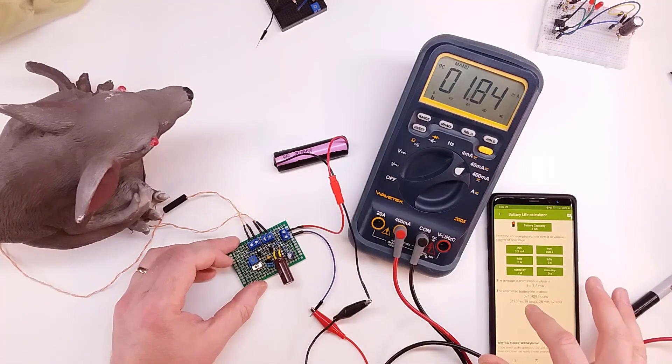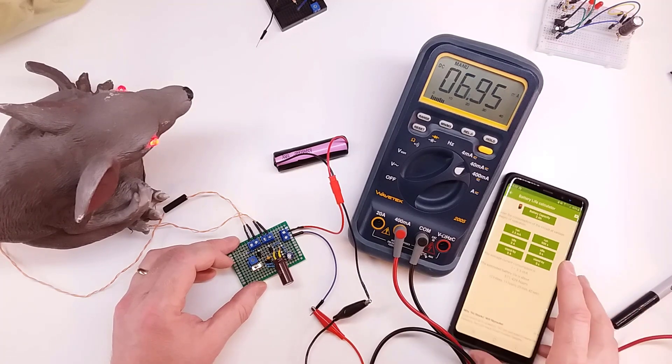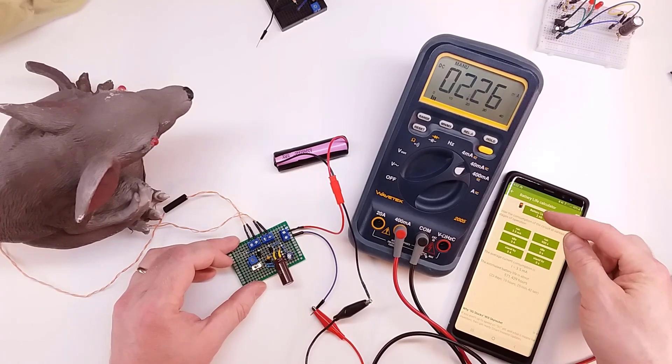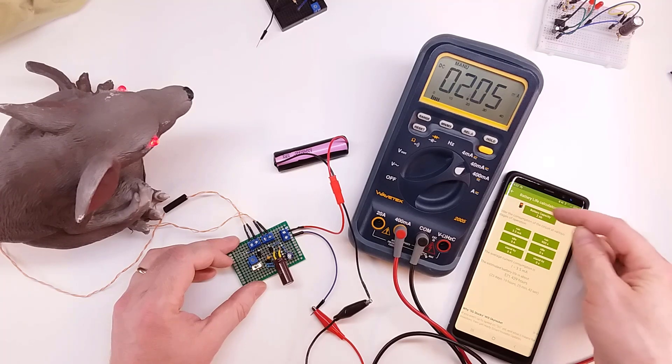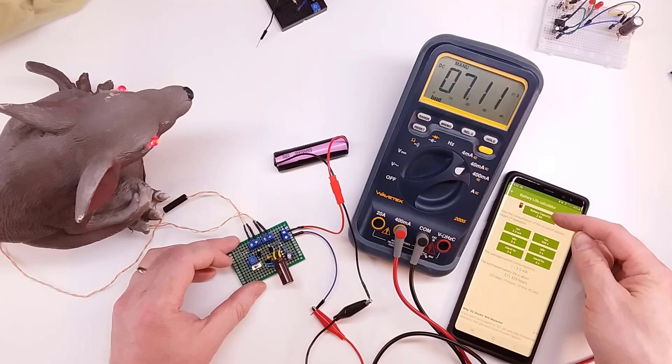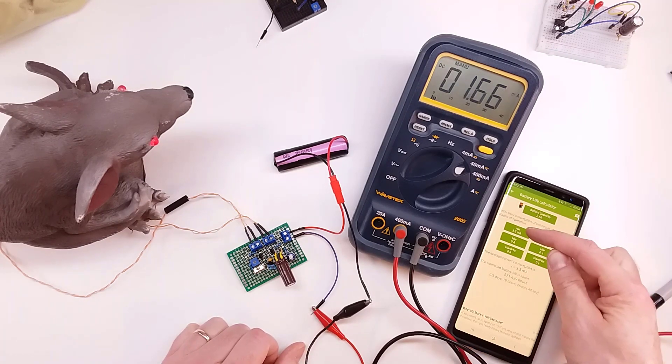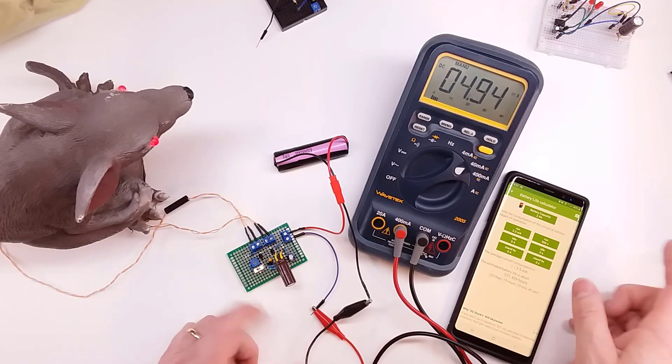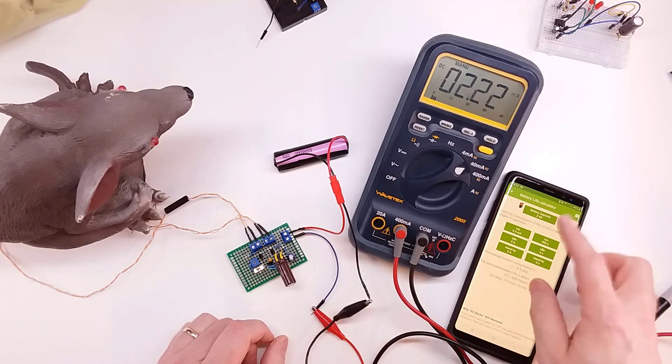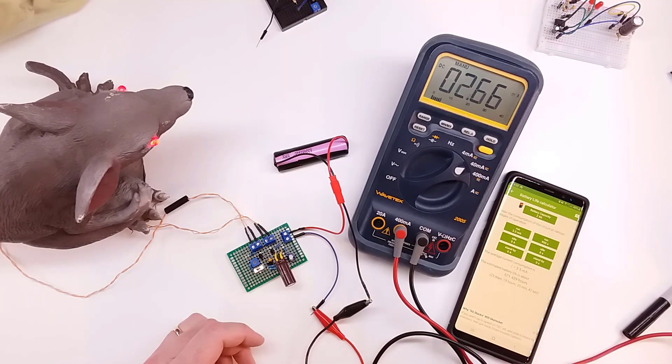So if we go ahead and pull up our battery calculator, which I've already done the check on here. If we say this is a 2,000 amp hour, or let me see, a 2 amp hour, 2,000 milliamp hour battery, which is pretty close to what this 18650 is. If we run that at 3.5 milliamps, don't worry about the runtime because it's going to be running constantly. It doesn't have a cycle on it.